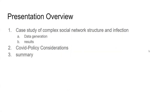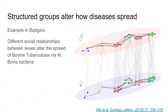For the presentation overview: first, I'm going to talk about the case study from the paper I mentioned, which is a case study in how a complex social network in an animal population changes over time, with results specific to infection by a bacteria causing tuberculosis. Then Gabrielle is going to talk about COVID policy. The paper by Silk et al. is about how animal populations structured by sex change seasonally and the implications for disease spread.